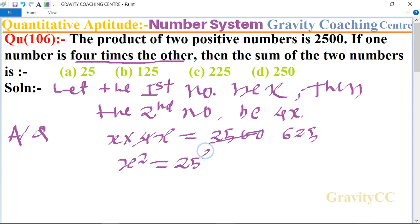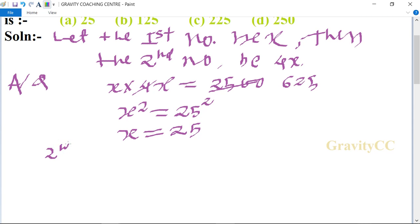So the first number is 25 and the second number is 4x = 4 × 25 = 100. Therefore their sum equals...